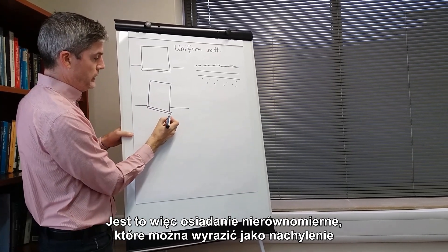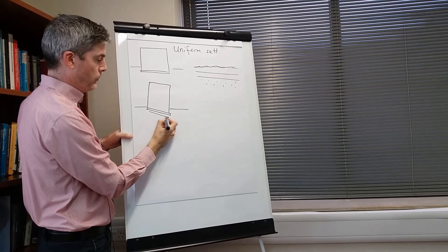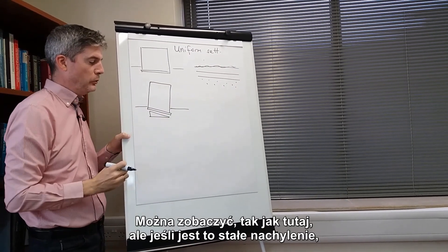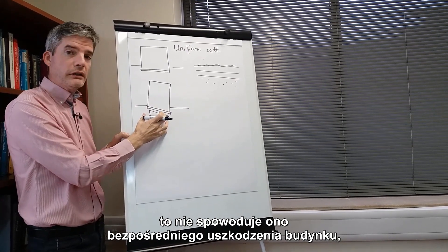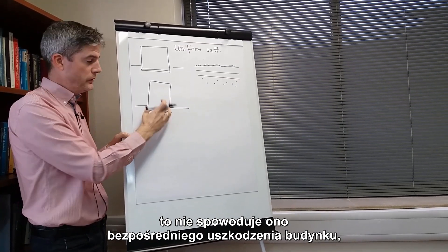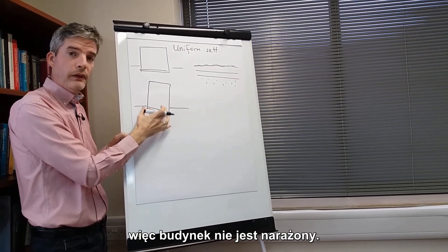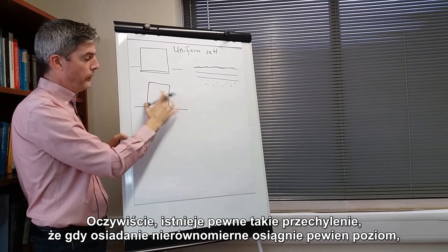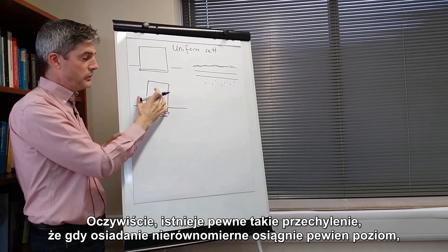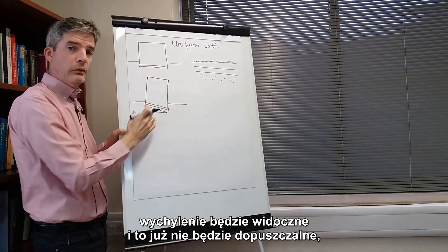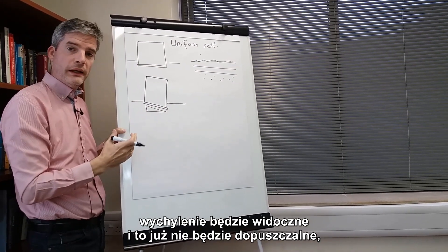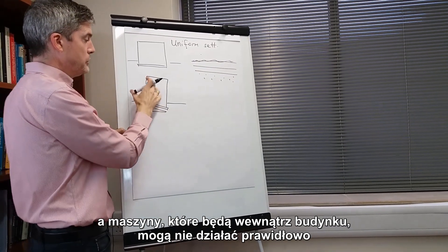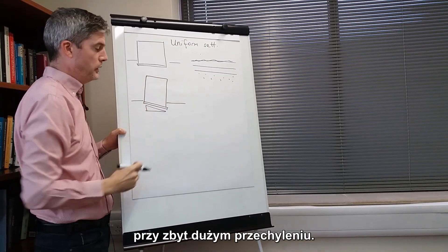And that can be expressed as a slope. But if it is a constant slope, that will not directly cause damage to the building because there's no distress being felt by the building. Clearly there is some tilt, so when the differential settlement gets to a certain level, the tilt will be visible and that will be unacceptable.